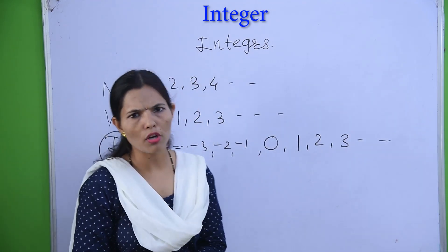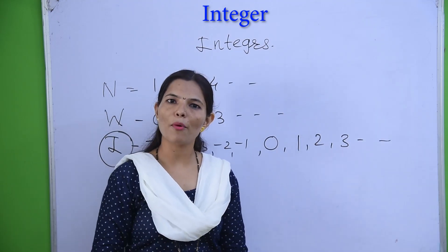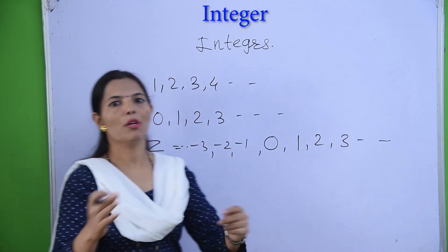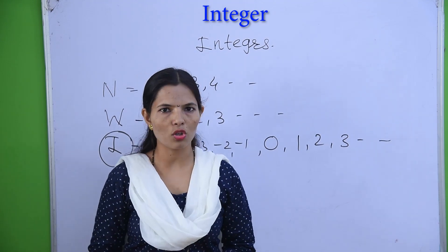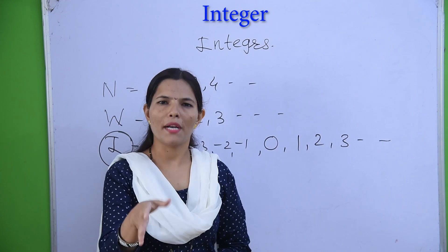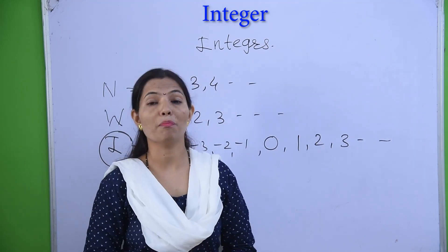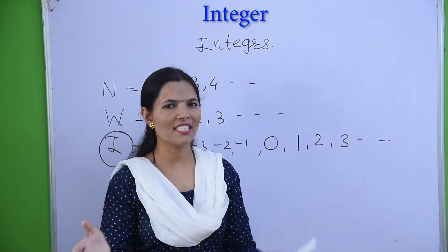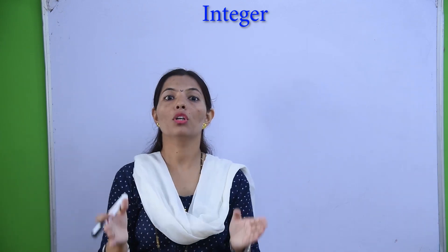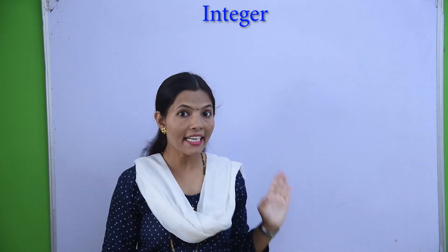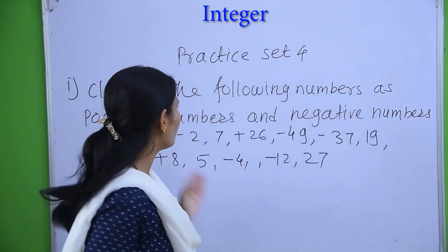That central point of the number line, or the point which represents 0, is called the origin. Positive numbers are on the right hand side of the number line, and negative numbers are on the left hand side. In today's lecture we study sixth standard, third lesson, integers — practice set 4. Let's see practice set 4.